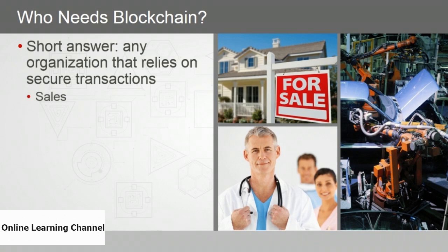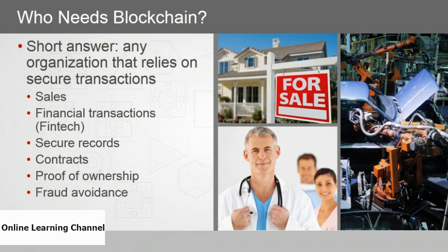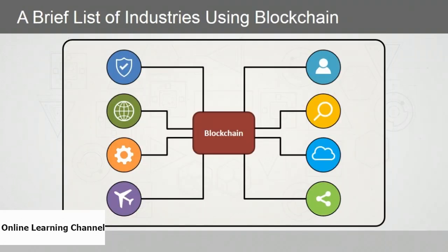That includes, in no particular order and an abbreviated list: companies that make sales, financial transactions, or fintech companies; companies that deal with secure records, contracts, and any transactions requiring proof of ownership; organizations that need to focus on fraud avoidance; and anyone else interested in secure knowledge. It would take an exhaustive discussion to cover all the industries affected by blockchain.